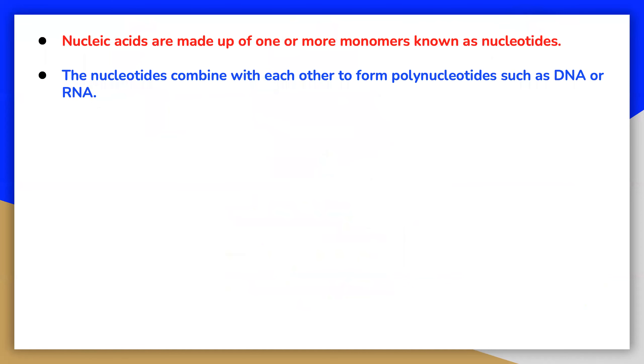Nucleic acids are made up of monomers or building blocks known as nucleotides. Nucleotides are the units and the chemicals that are strung together to make nucleic acids, most notably DNA and RNA. Both of those are long chains of repeating nucleotides.